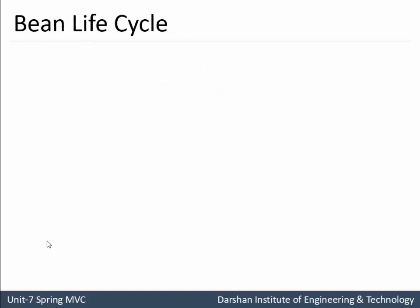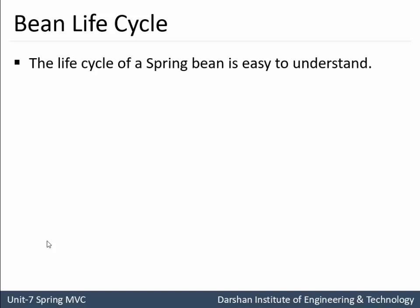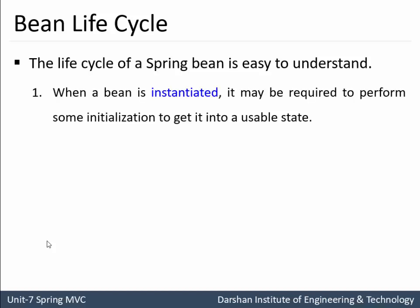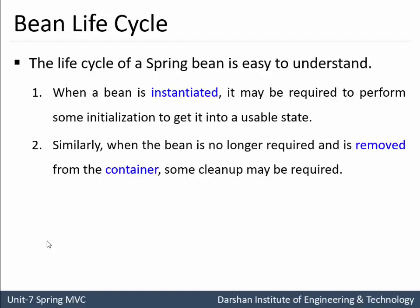Now the bean life cycle — the most important part of Java bean. The life cycle of a Spring bean is easy to understand. If you are familiar with the servlet and JSP life cycle, it is much easier to understand the life cycle of a Java bean. First, when the bean is instantiated, the Java bean is instantiated within the container and it may be required to perform some initialization to get it into a usable state. Similarly, when the bean is no longer required, it is removed and made available to the garbage collector. Some cleanup may be required.